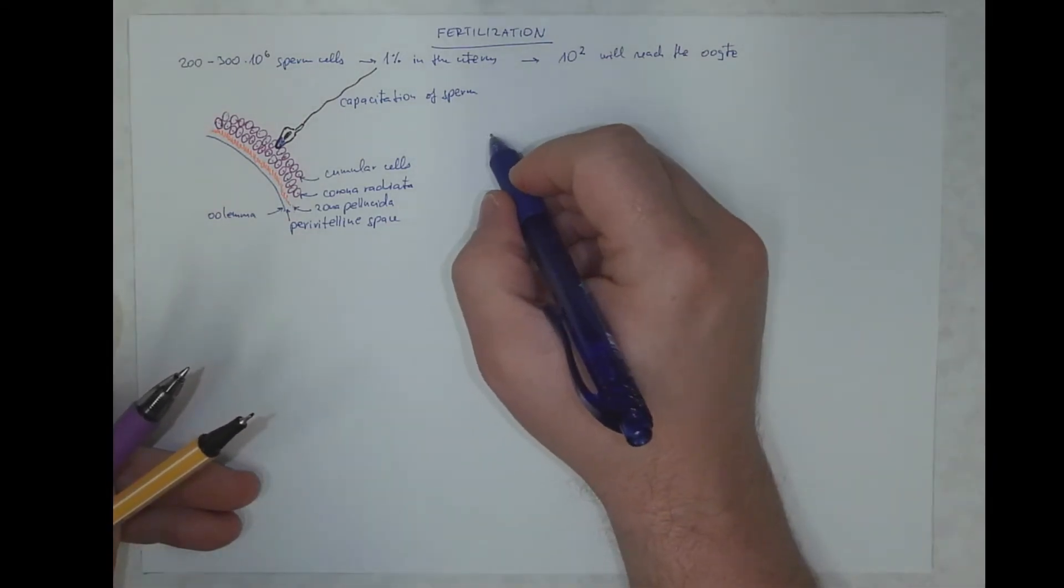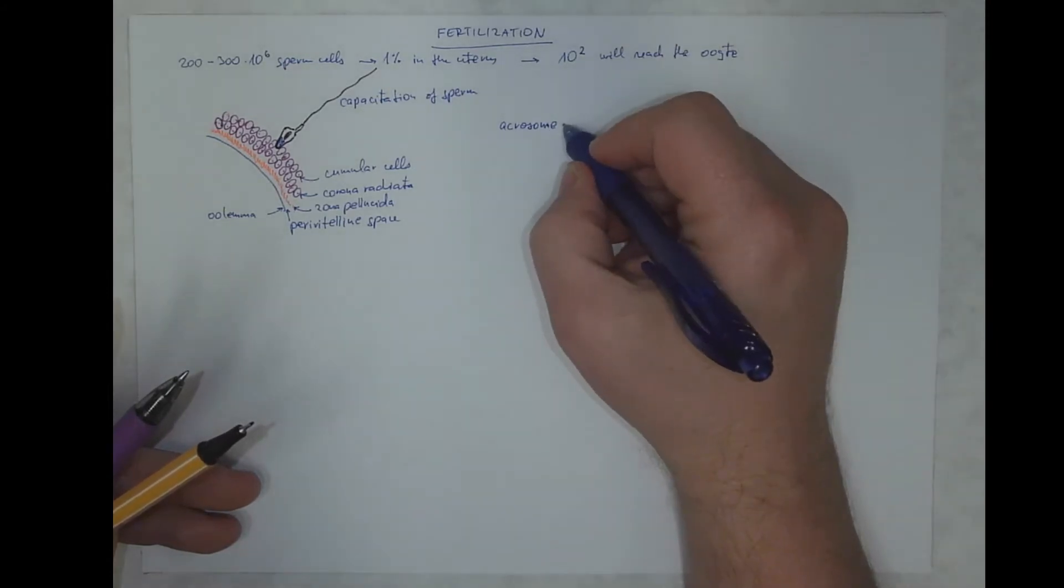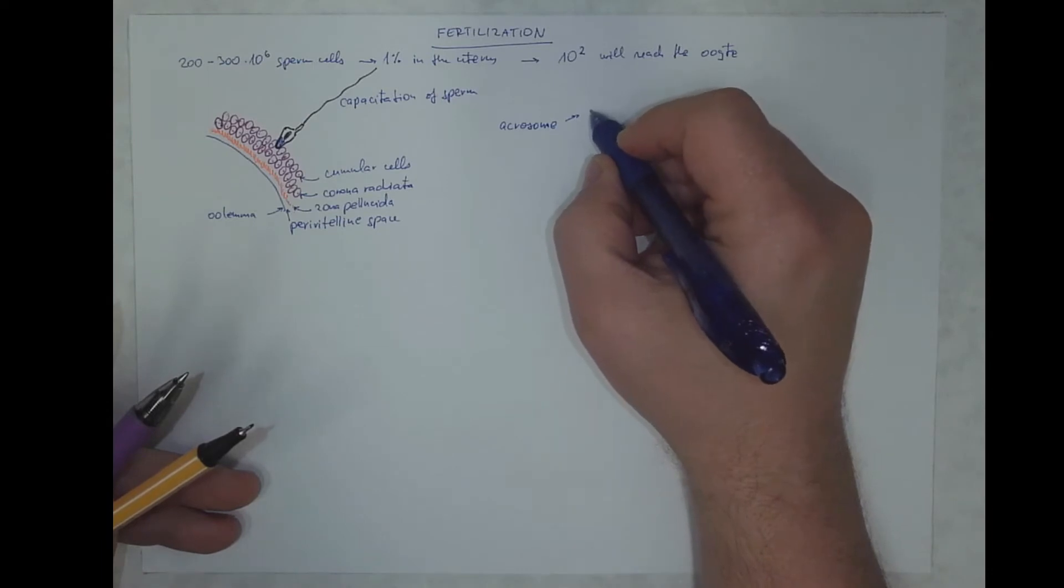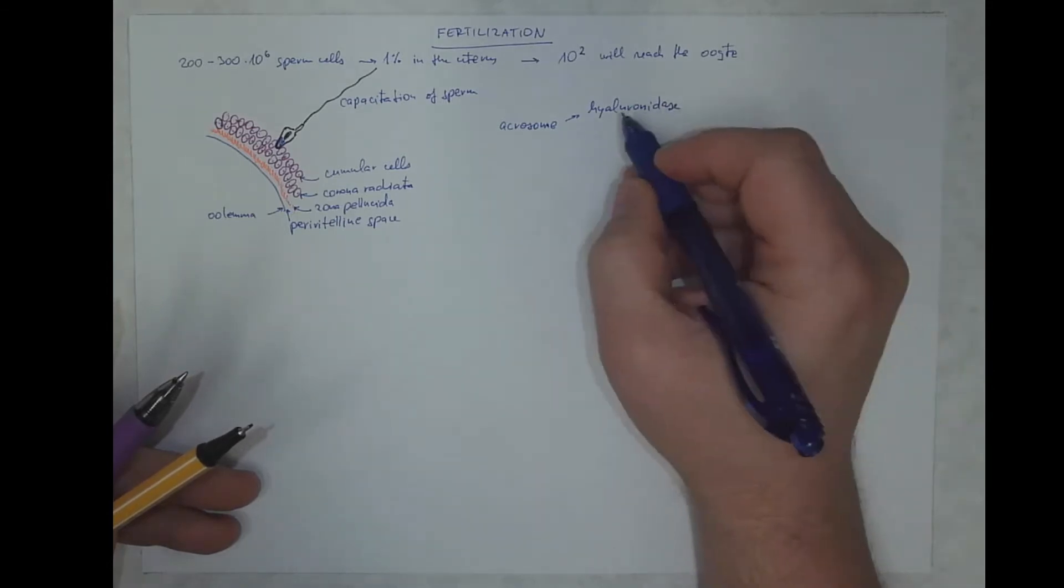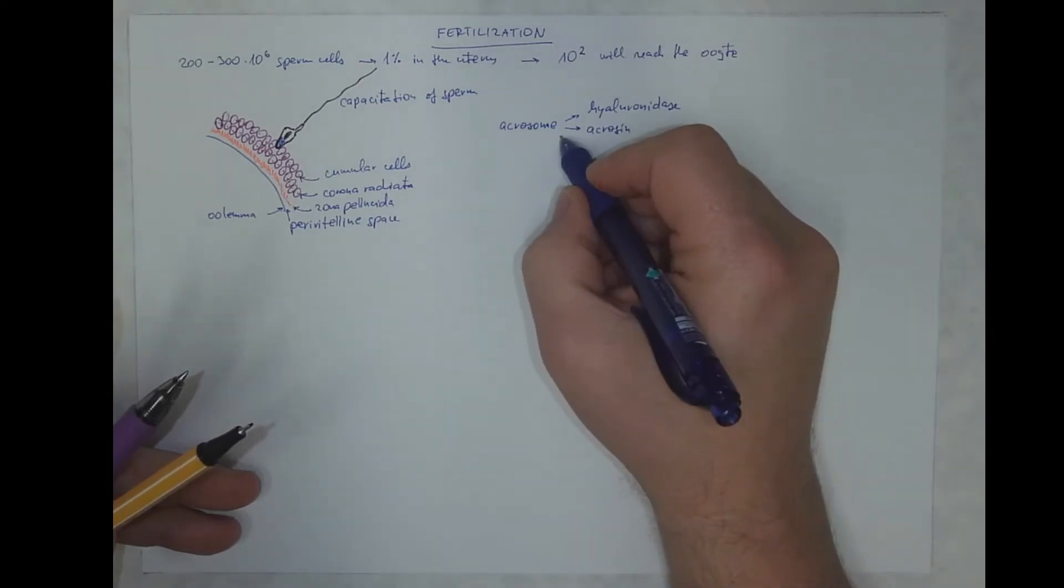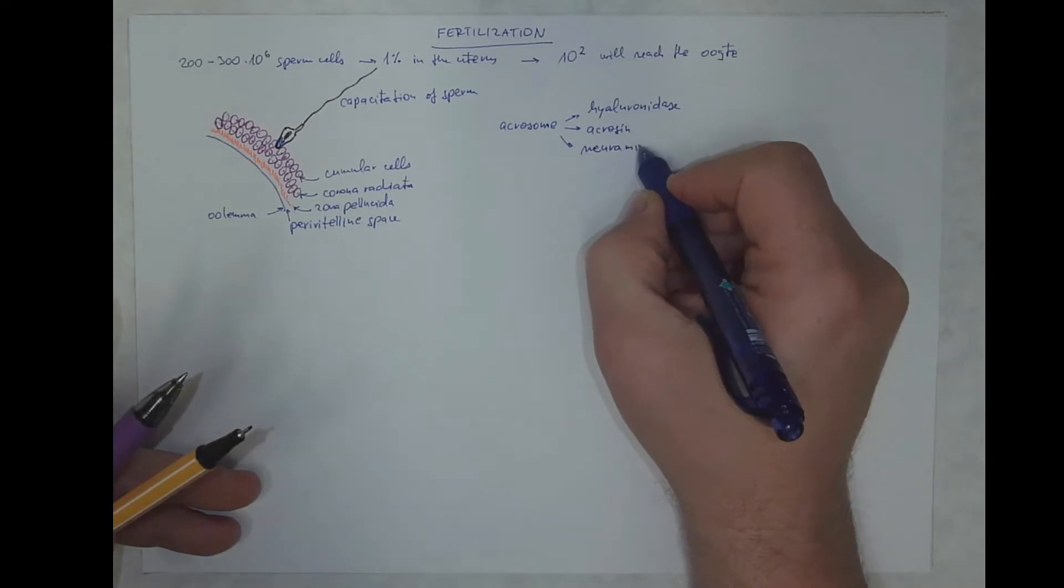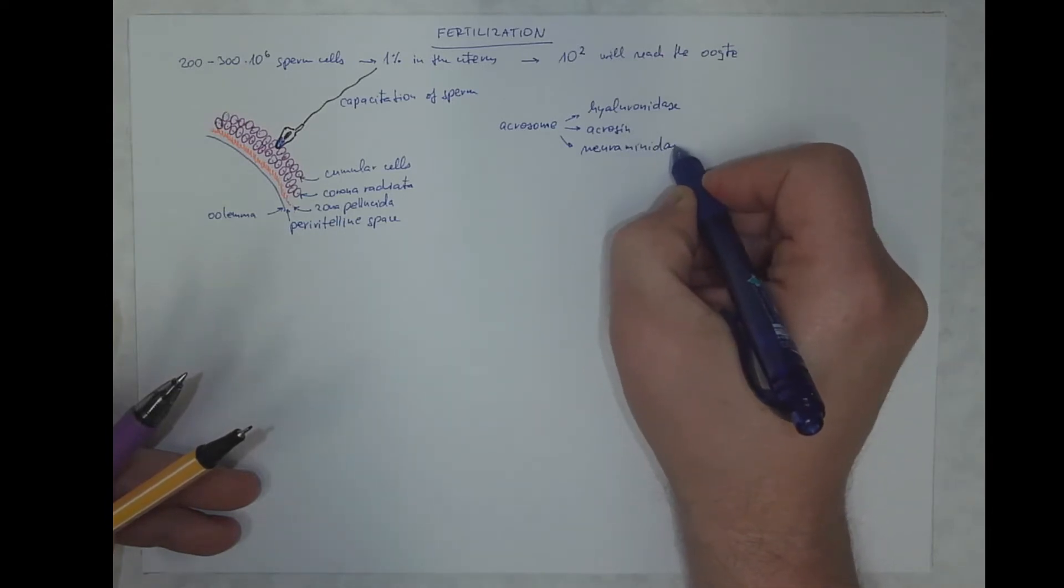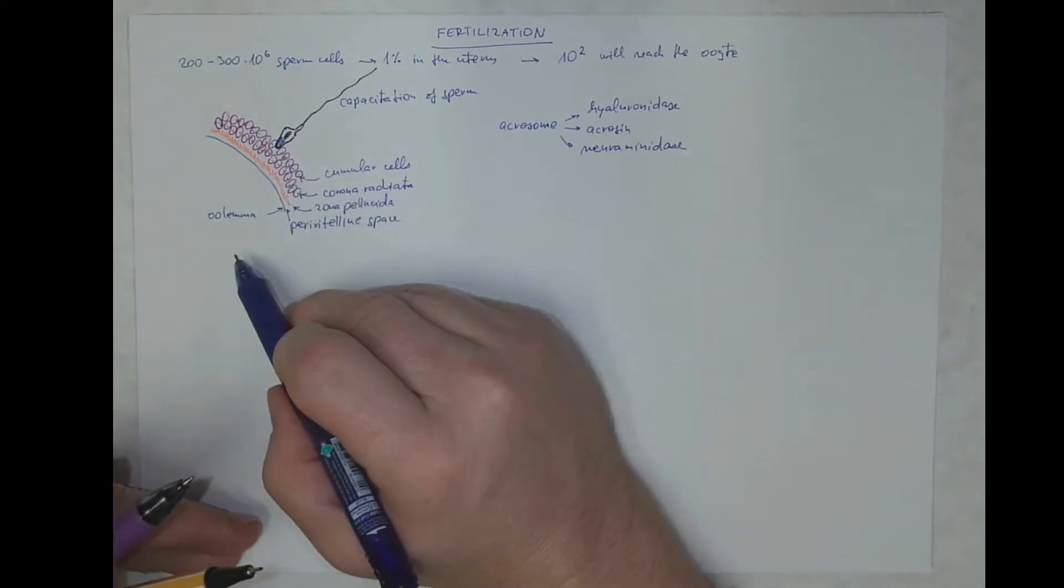So the acrosome contains a variety of molecules and enzymes. Let me mention, for example, the hyaluronidase, acrosin, neuraminidase. That will help with the adhesion and the penetration through these layers.